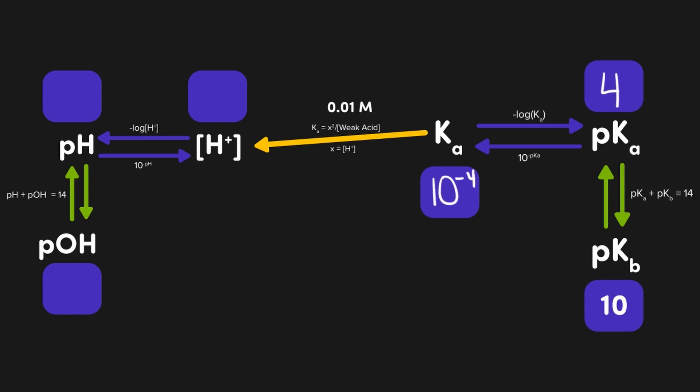If we plug everything into our Ka equation, we would get 10 to the negative 4 equals x squared over 10 to the negative 2, or the square root of 10 to the negative 6. Therefore, the H+ concentration equals 10 to the negative 3. This means the pH would be 3 and the pOH 11.